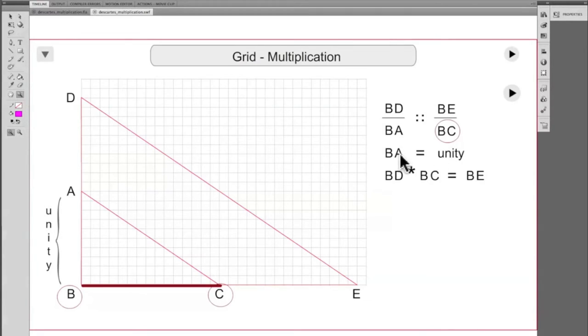Next, Descartes arbitrarily assigns a unity value to BA. He then cross-multiplies and treats the statement as an equation instead of a proportion.